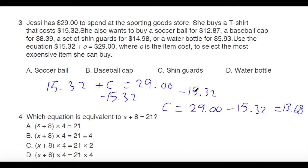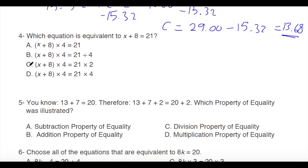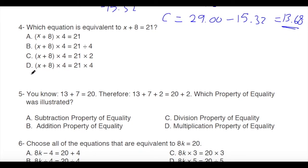With c equals 13.68, which item can she buy? Most items are under this amount, but the most expensive one she can reasonably afford is the soccer ball at 12 dollars 87 cents.